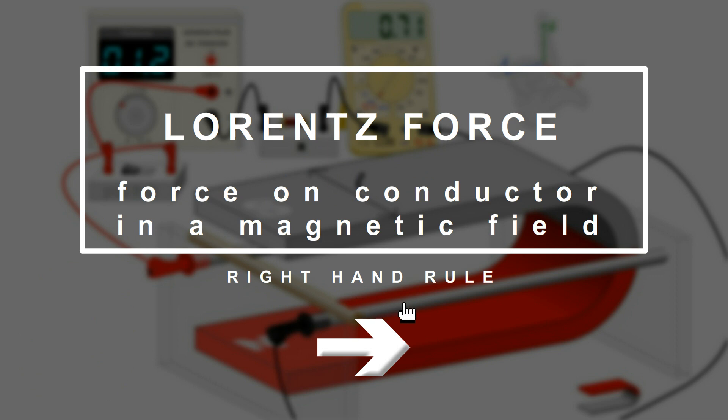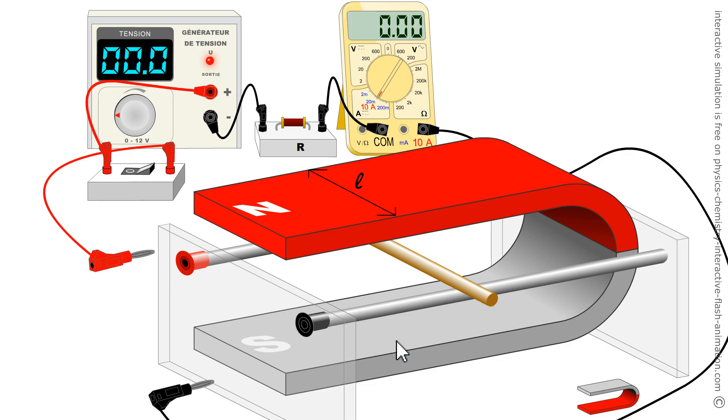We will experiment with the rail and a rule which allows us to find the directions and meanings of the different protagonists. Here is the material. When I speak of the protagonists, it is because there will be: 1. A magnetic field here coming out north of the U-shaped magnet and going south.